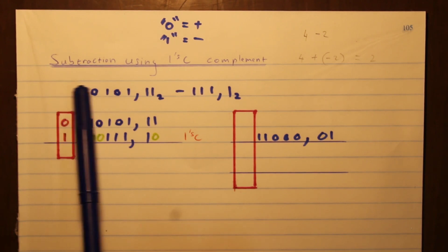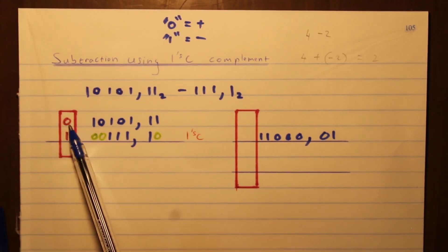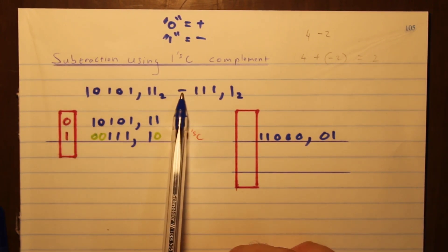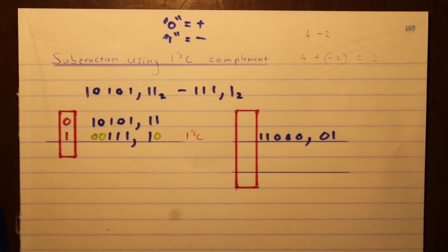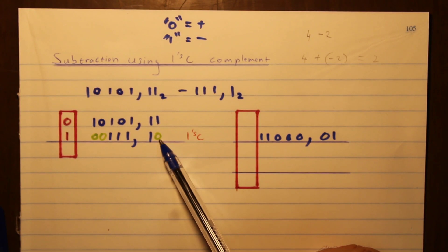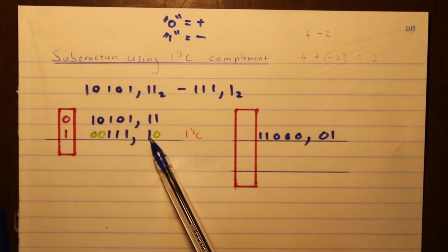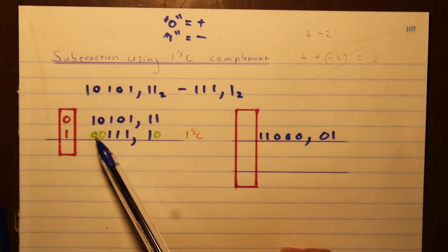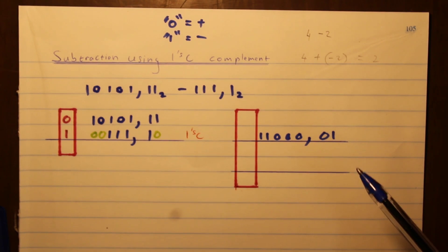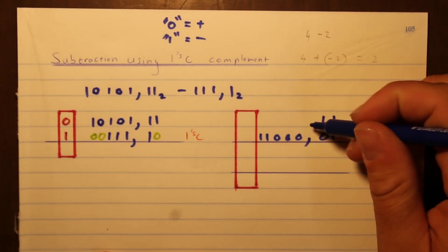Because the first number has no sign in front of it, it's positive, so it gets a zero as its sign bit. The second number gets a one because of the negative sign in front of it. The number that is negative has to be complemented — every zero becomes a one and every one becomes a zero. So that zero became a one, that one became a zero, those three ones became zeros, and those two zeros became ones.